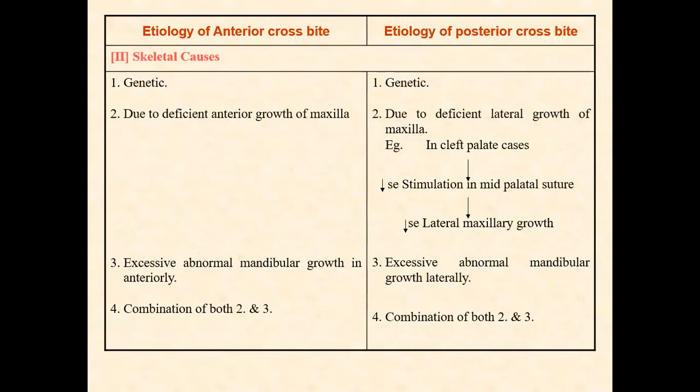The skeletal causes of posterior cross bite: it can be genetic, or due to deficient lateral growth of the maxilla. In cleft lip and palate cases there is decreased stimulation of the mid-palatal suture, resulting in decreased maxillary growth. Lateral deficiency of maxillary growth is most commonly seen in cleft lip and palate cases. Excessive lateral mandibular growth, or a combination of both, is another cause.